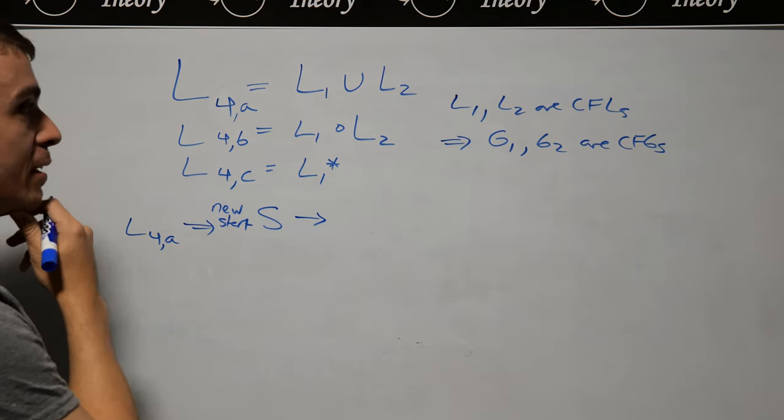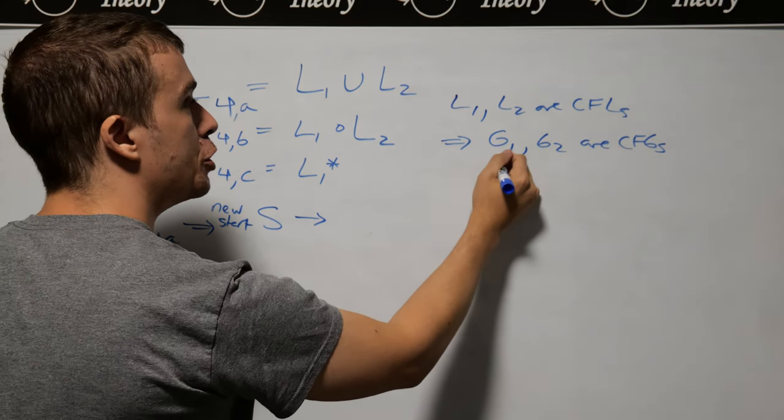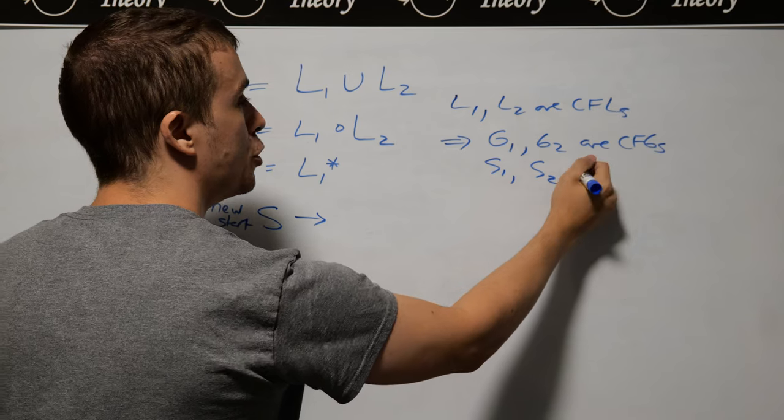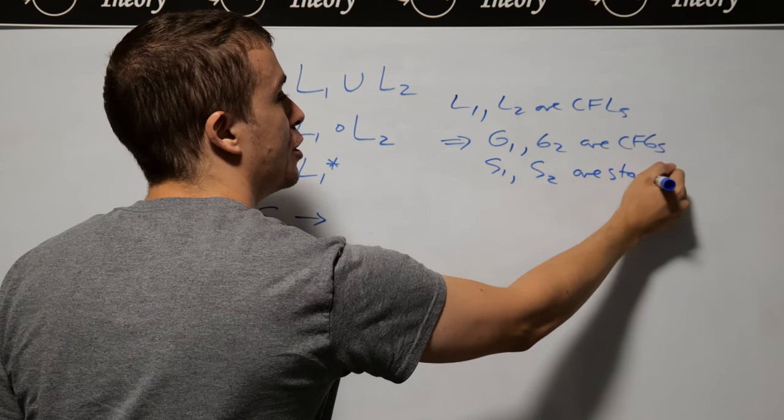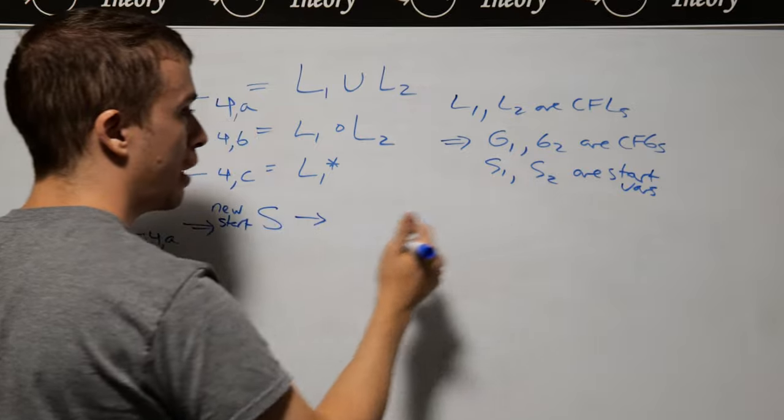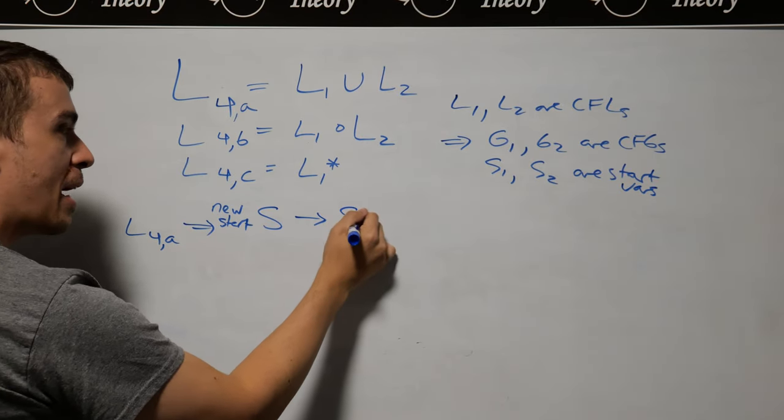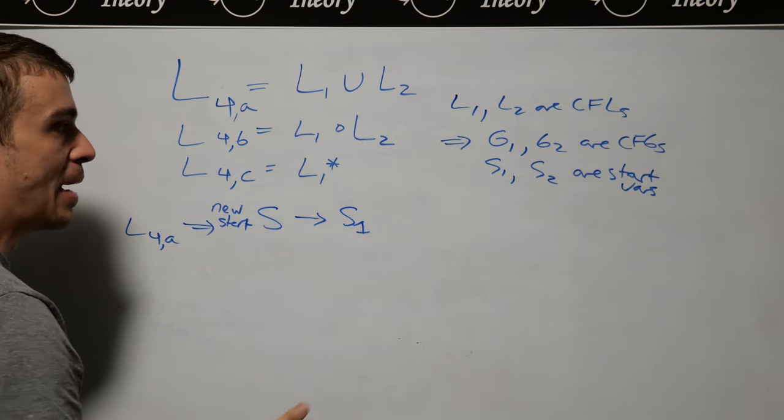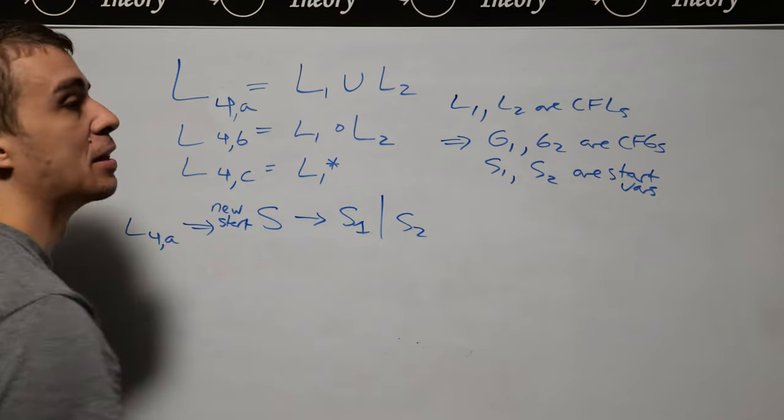Then I'm going to add a rule here that says, I'm going to go to the start variable of these two grammars. So let's call them S1 and S2 of these two grammars. Then I can either have S1 make the string that I'm after, or S2 can make the string that I'm after.